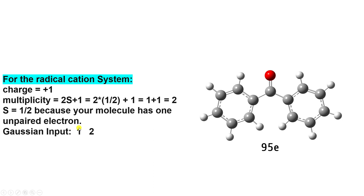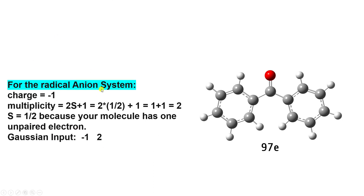Next is the radical anion system. Here the total charge is −1 because we add one electron to benzophenone, giving 97 electrons total (neutral benzophenone has 96). There is one unpaired electron, so 2S + 1 = 2 × (1/2) + 1 = 2. In the Gaussian input file you have to mention charge −1 and spin multiplicity 2.